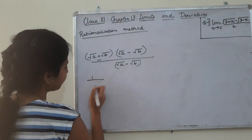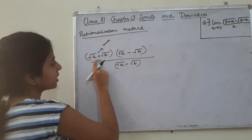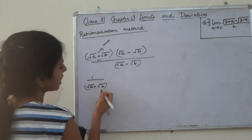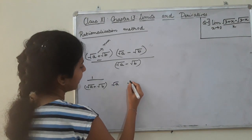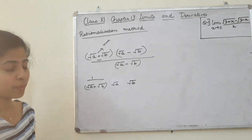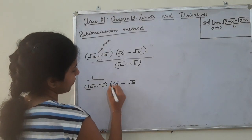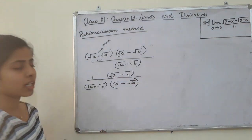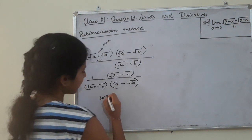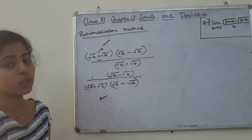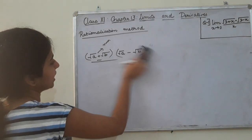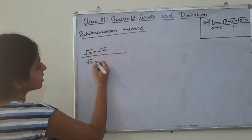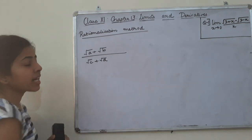How do we do this? We have the radical sign in the numerator. In the denominator, we are going to apply the same method — multiplying by the conjugate.